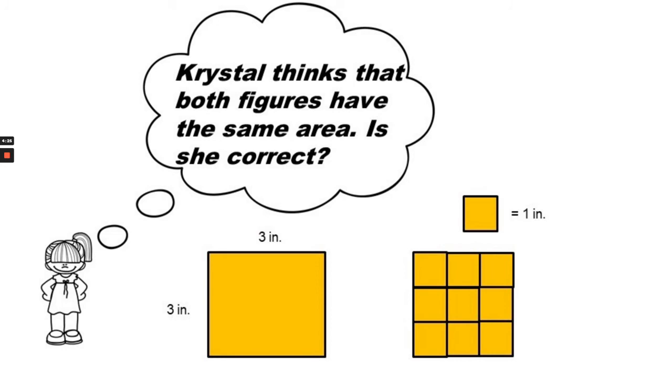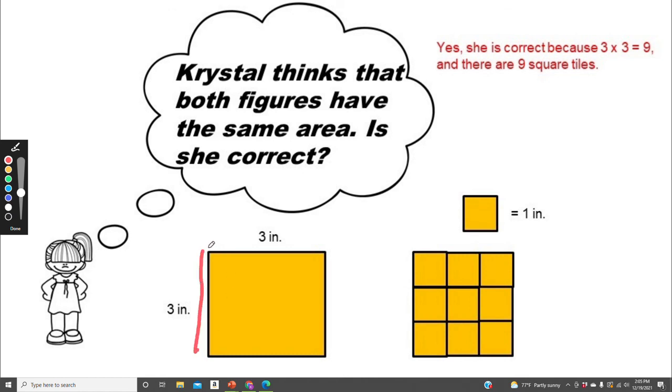Crystal thinks that both of these figures have the same area. Is she correct? Yes, she is correct because three times three equals nine. And there are three, six, nine tiles here. And both are being measured in inches, so they're both nine square inches.